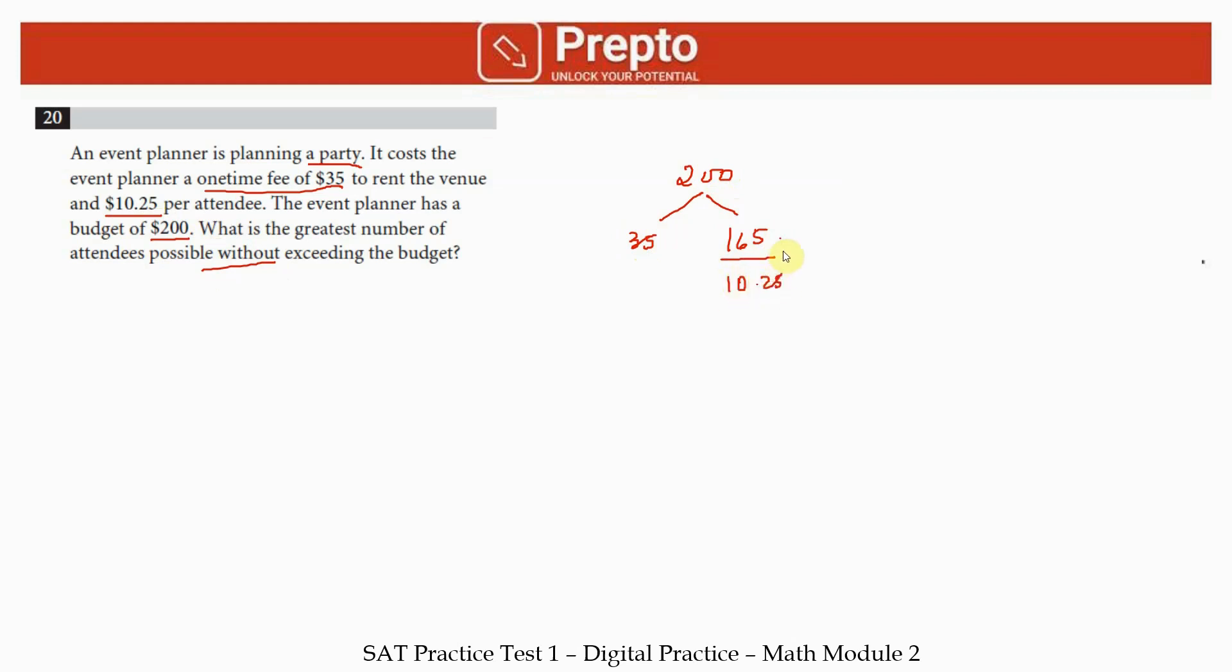At max, how many attendees can you have? Divide the cost per attendee: take 165 and divide by the cost per attendee. You can use your Desmos calculator. If I approximate 160 over 10, 16 is a good number. 10.25 is 41 by 4, so if I multiply by 16, 4 times 4 is 16 per attendee cost, and I have 165, meaning enough dollars to spare. I can have 16 people attending without exceeding the budget.